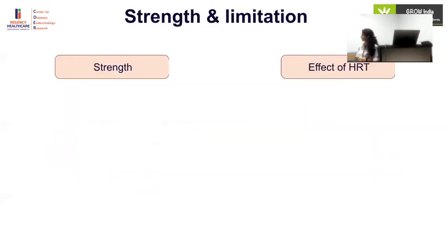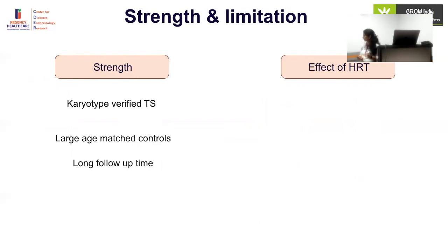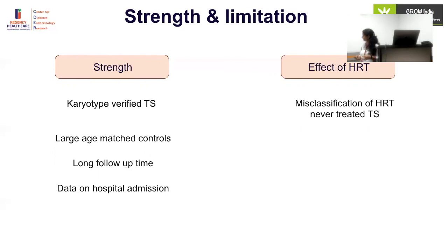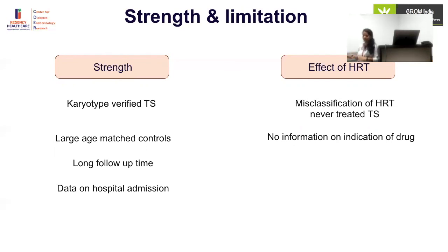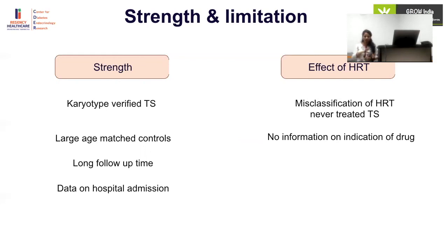Study strengths include karyotype-verified Turner syndrome, large age-matched controls, long follow-up, and linked data from both hospital admissions and pharmacy prescription records. A limitation is that the medication registry only covers prescriptions after 1995, so HRT prescribed before that may be missed, leading to possible misclassification of the non-treated group. The HRT analysis included only 18-to-60-year-old women with 45,X karyotype, not other karyotypes or women outside that age range.